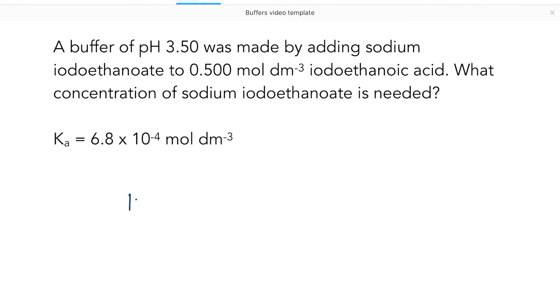Let's start by going back to our original expression for the buffer solution. So Ka of the weak acid equals H+ times A- over HA. So that's the A- being the concentration of the salt, which is what we have been asked to find.